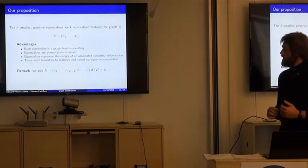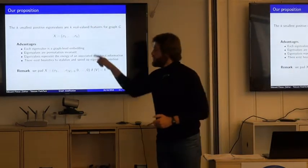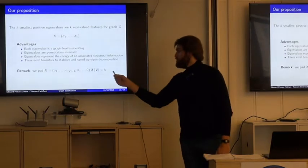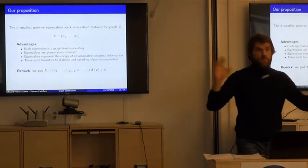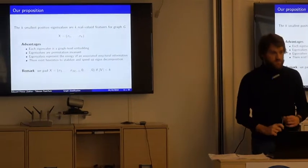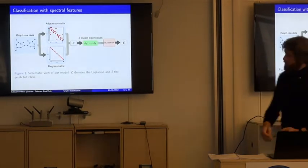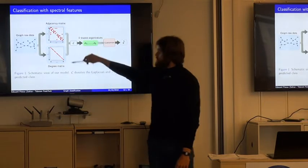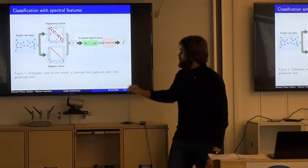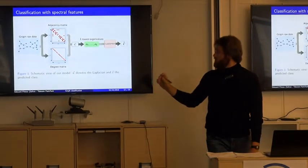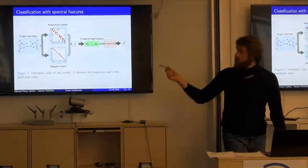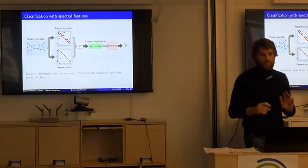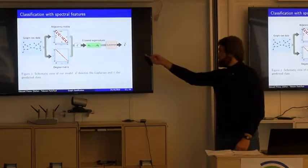The whole pipeline is: take a graph, compute the adjacency and degree matrices, build the Laplacian, take the k-smallest eigenvalues — which is algorithmically efficient — then use any classifier from the machine learning literature to get a predicted class. It is very simple. We use the randomized version of a decision tree, i.e., a random forest, because it gave better results.